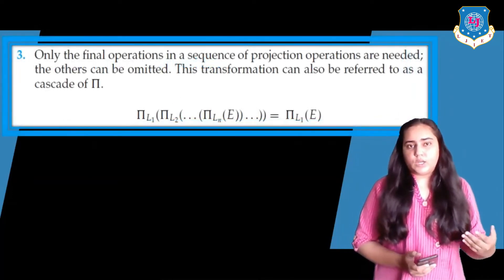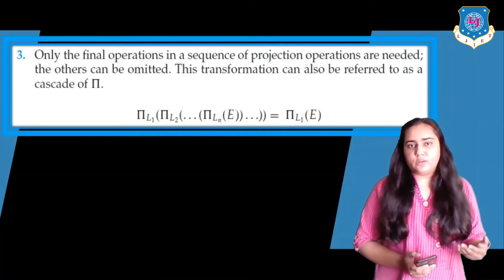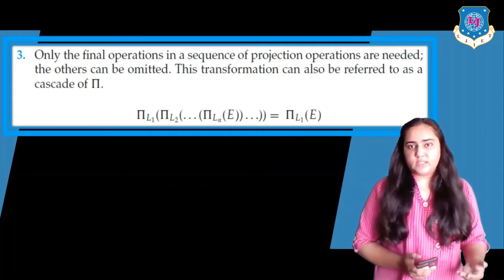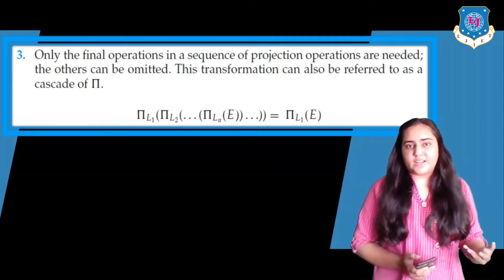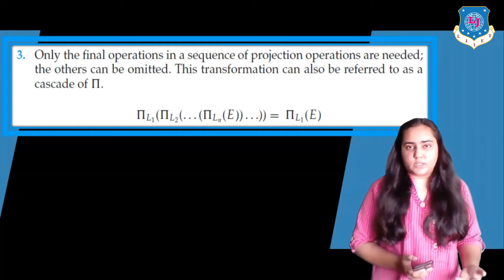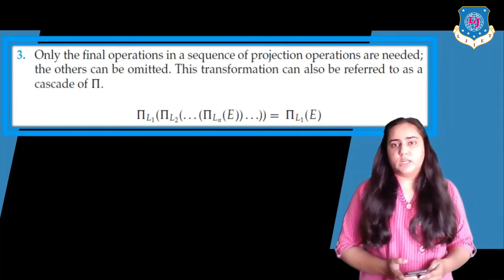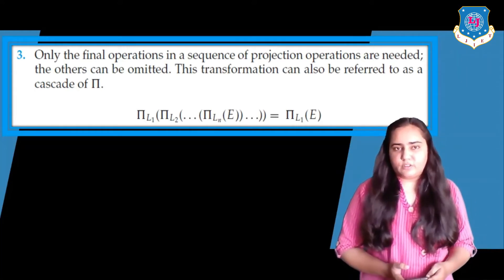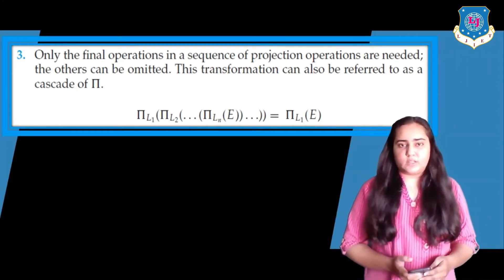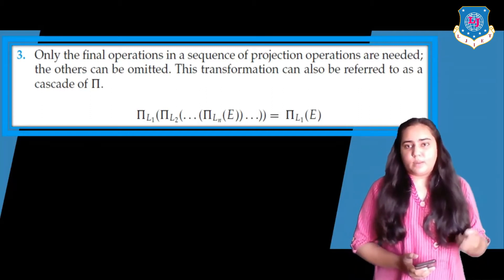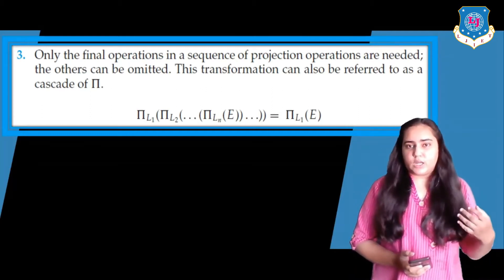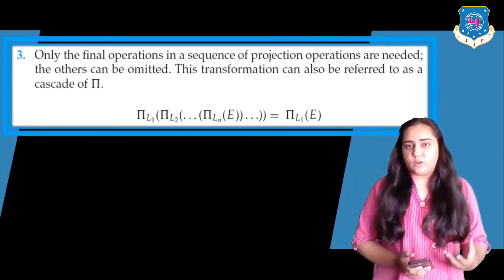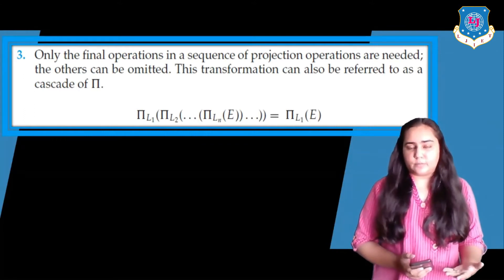The third rule says that only the final operations in a sequence of projection operations are needed; the others can be omitted. This transformation can also be referred to as a cascade of pi. Remember that the pi operation extracts columns from a particular table.